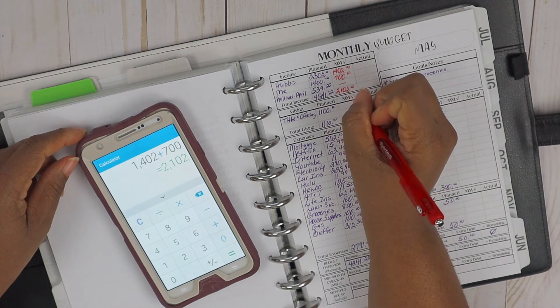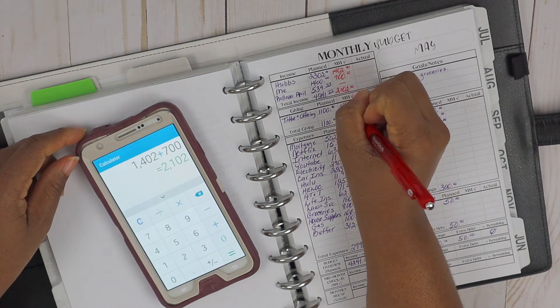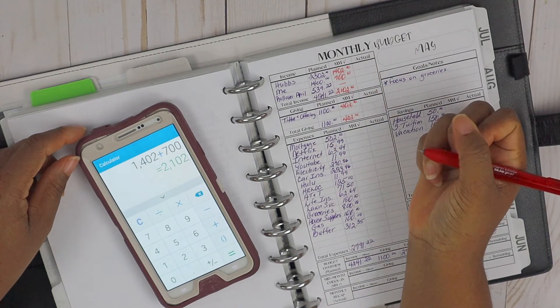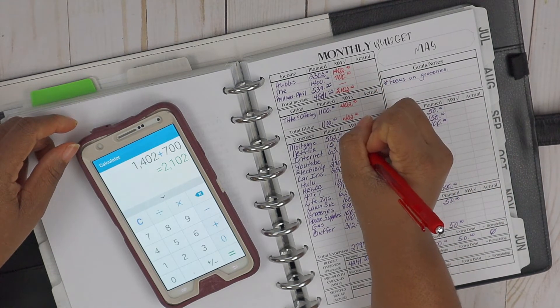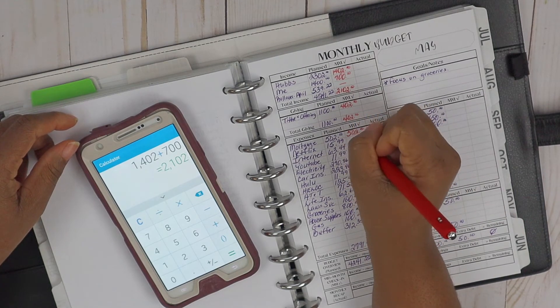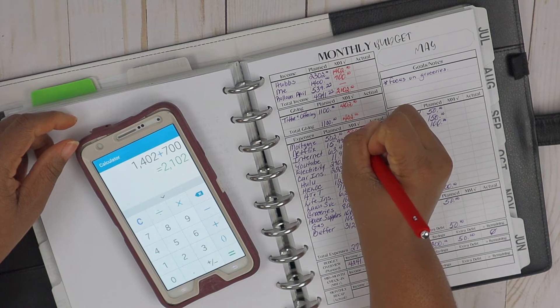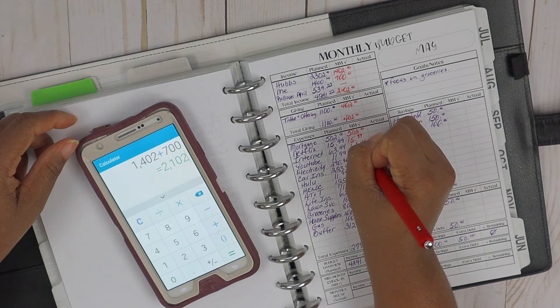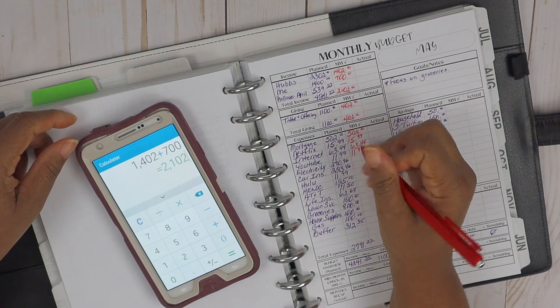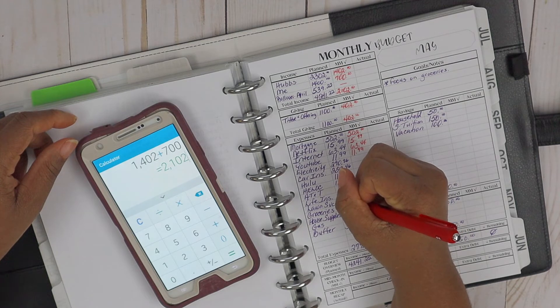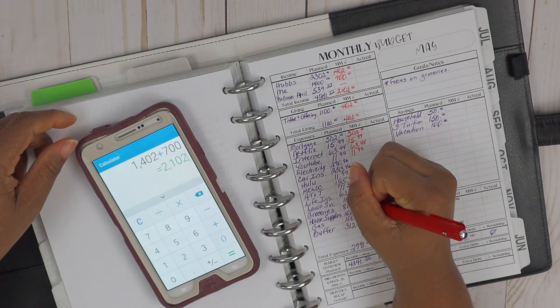And then for our giving, we end up giving a total of $402 at mid-month, and our mortgage, $502, that was taken care of. Netflix $15.99, internet was taken care of, YouTube now, electricity, car insurance, HELOC, AT&T, life insurance, lawn service.